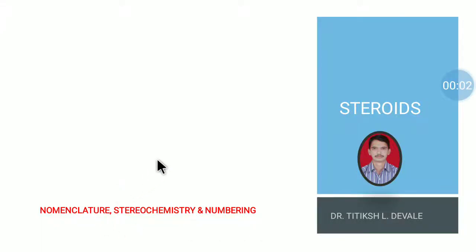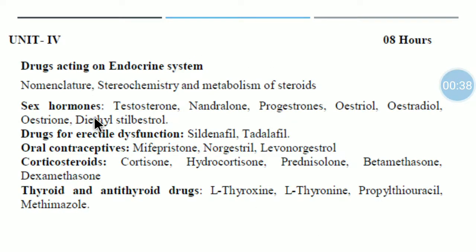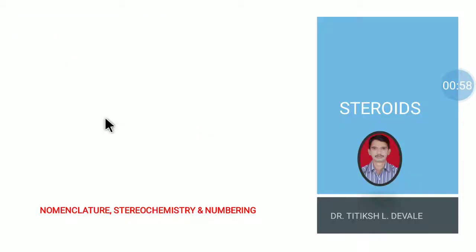Dear students, today we are going to study unit number 5 from your syllabus, which consists of drugs acting on the endocrine system or the endocrine glands. These endocrine glands are going to secrete some hormones which are going to show some kind of potent effect. In our syllabus we have sex hormones, drugs for erectile dysfunction, oral contraceptives, corticosteroids, thyroid and antithyroid drugs. Most of these agents we are using for treating a variety of diseases.